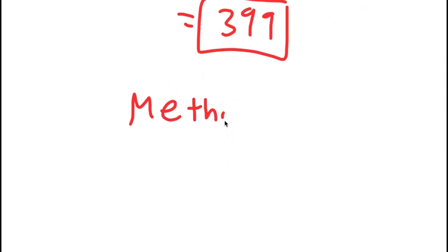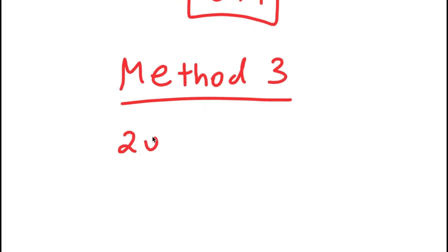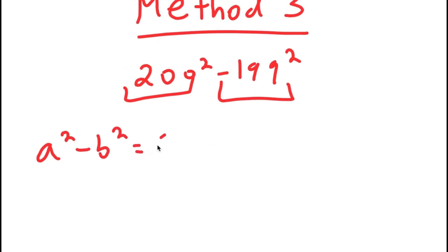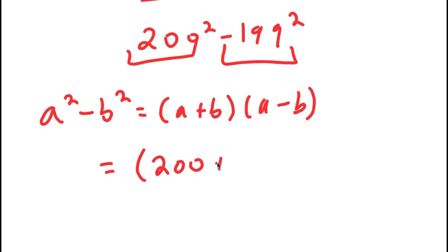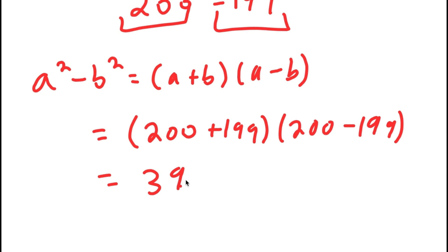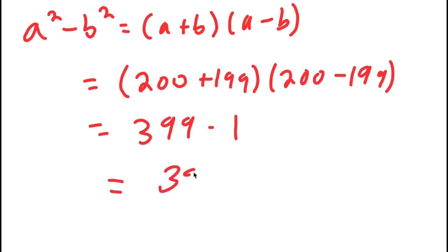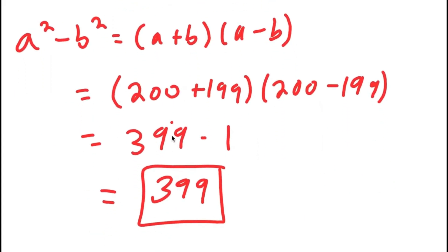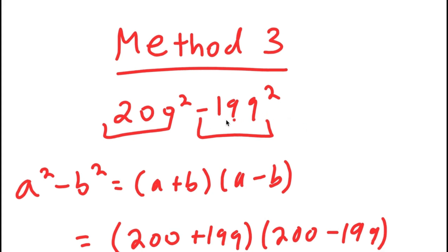Finally, for method number three, I have 200 squared minus 199 squared. I'm simply going to use the property a squared minus b squared equals a plus b times a minus b. So I get 200 plus 199, times 200 minus 199. 200 plus 199 is 399 and 200 minus 199 is 1. So I get 399 times 1, which is just 399. This is probably the most efficient of the three methods. Whenever you see a number squared minus another number squared, always use this property because it's really helpful for solving the problem fast.